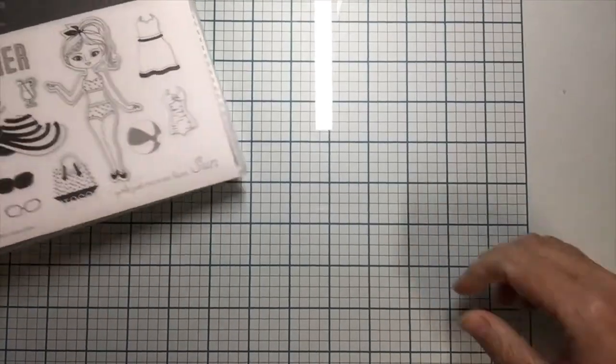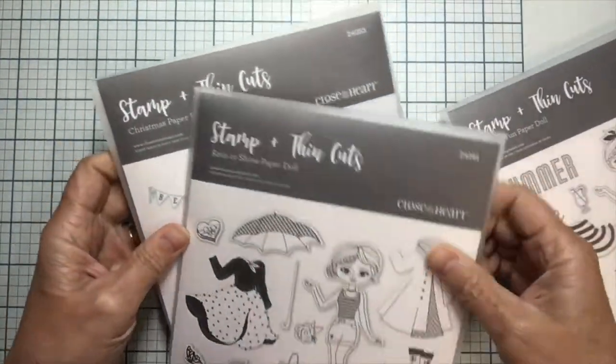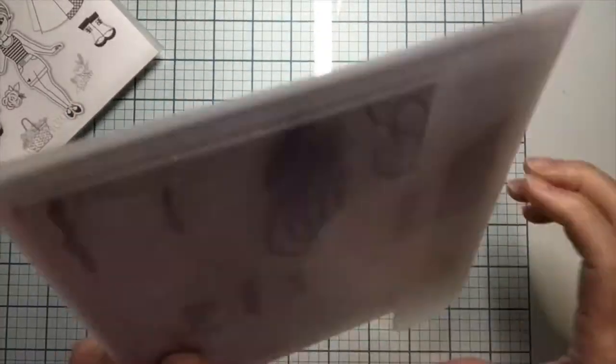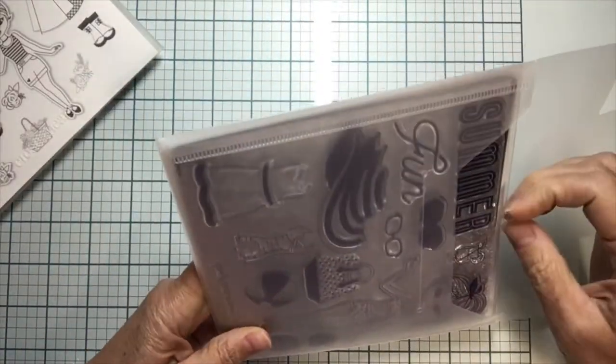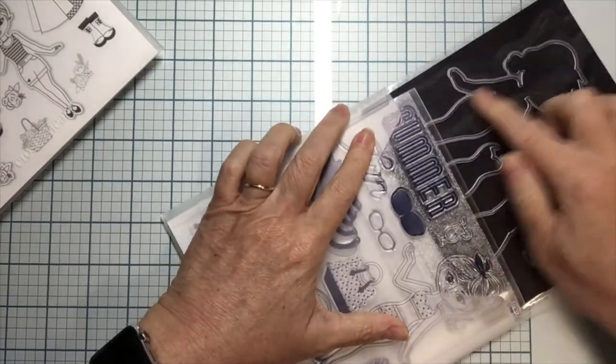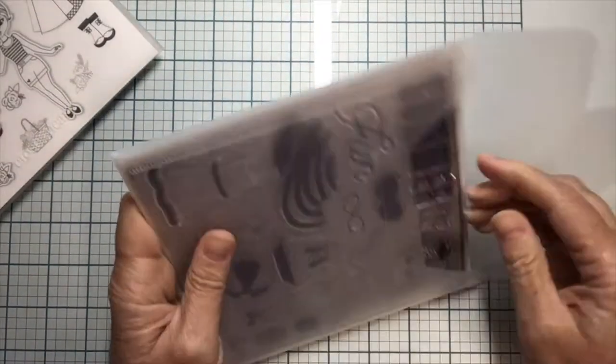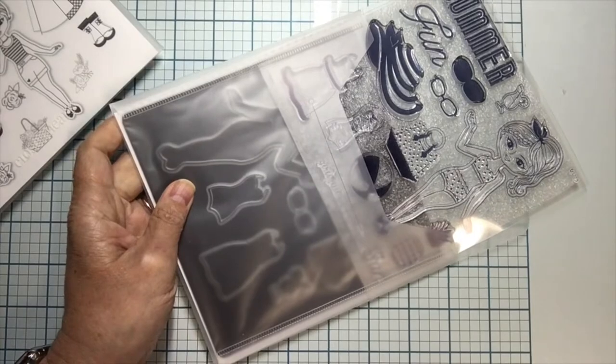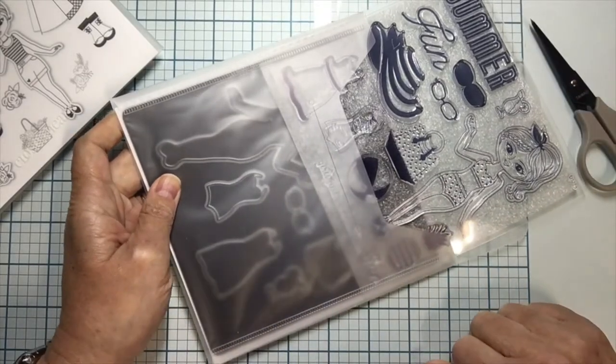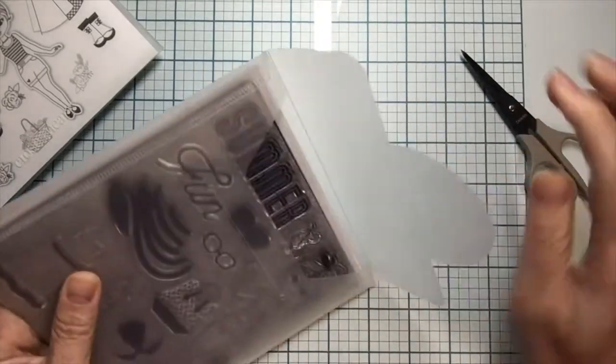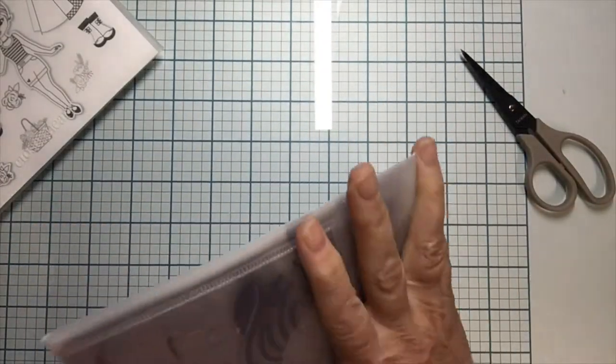Lots of us have paper doll stamps or at least die cuts perhaps that cut out the shapes. Perhaps you know how to draw really well and you draw the paper doll silhouette, or maybe you have some vintage paper dolls that you are turning into cards or scrapbooking projects. But for today, I'm just going to use my paper doll die cut that I have and cut my silhouette with that.